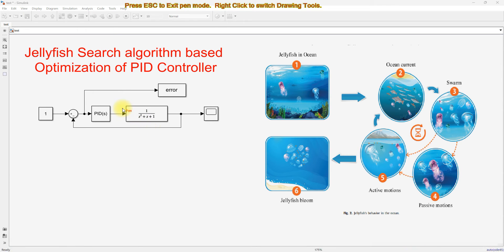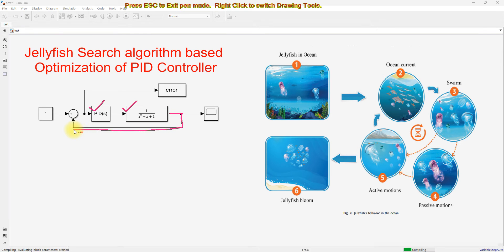This model consists of a plant — here we are considering a second-order plant — and it will be controlled by means of a PID controller. The output of this plant is taken as feedback and compared with the reference signal. The error is then processed via the PID controller, which provides a control signal to the plant in order to track the reference command.